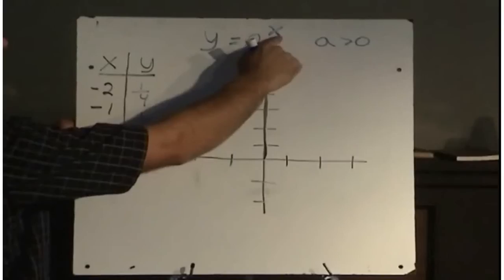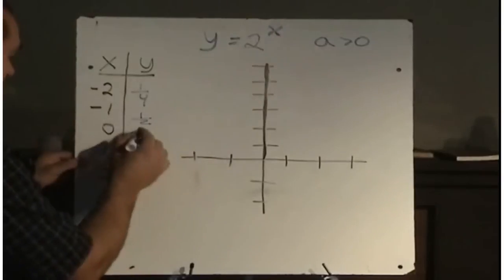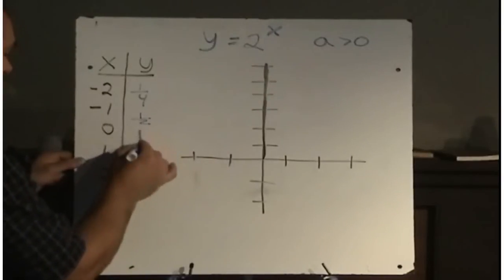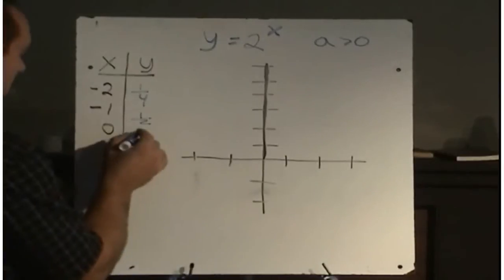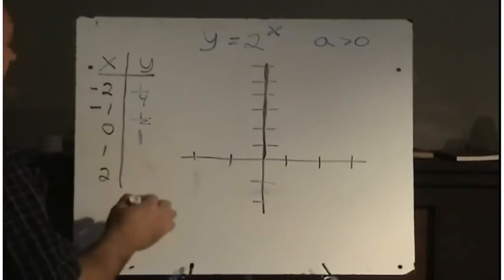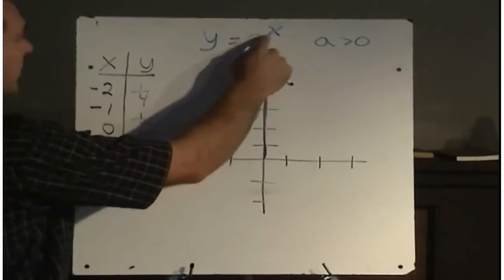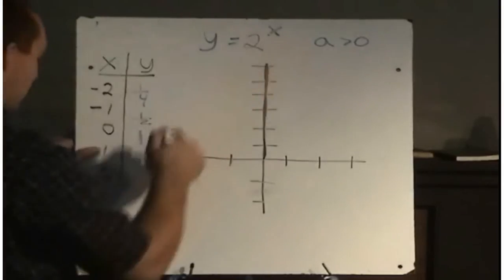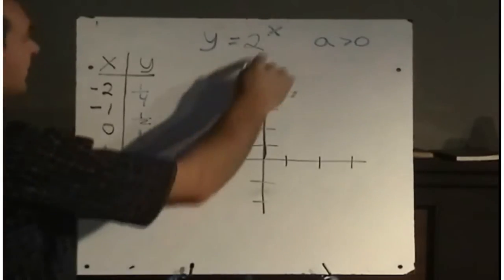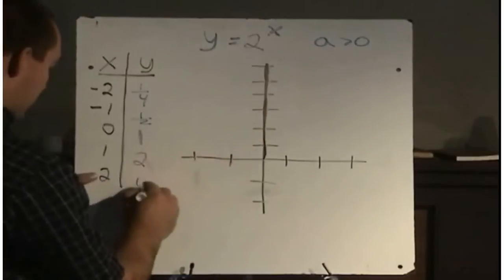Substituting in 0 for x, 2 to the power of 0, well any number to the power of 0 is 1, that's a definition. These are exponent rules that you would have learned in previous math courses. So any number when you raise it to the power of 0 will always equal 1. And then if x equals 1, 2 to the power of 1 is 2. And when x equals 2, 2 to the power of 2 is 4.